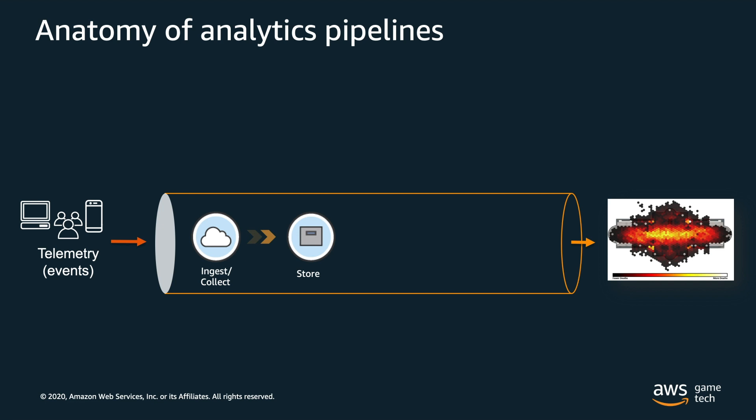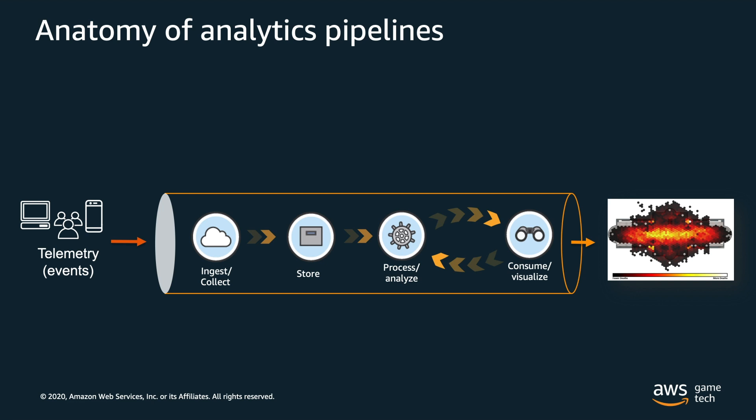The next phase is store. Once you gather your data, you need to be able to store it somewhere, and there are some questions you'll have to answer: Is there going to be PII — personally identifiable information? How are you going to secure it? How are you going to organize your data? The next stage is process, where you do ETL — extract, transform, and load — to analyze it. Finally, the last stage is visualize, where you consume your data using a business intelligence tool to get insights for your game.